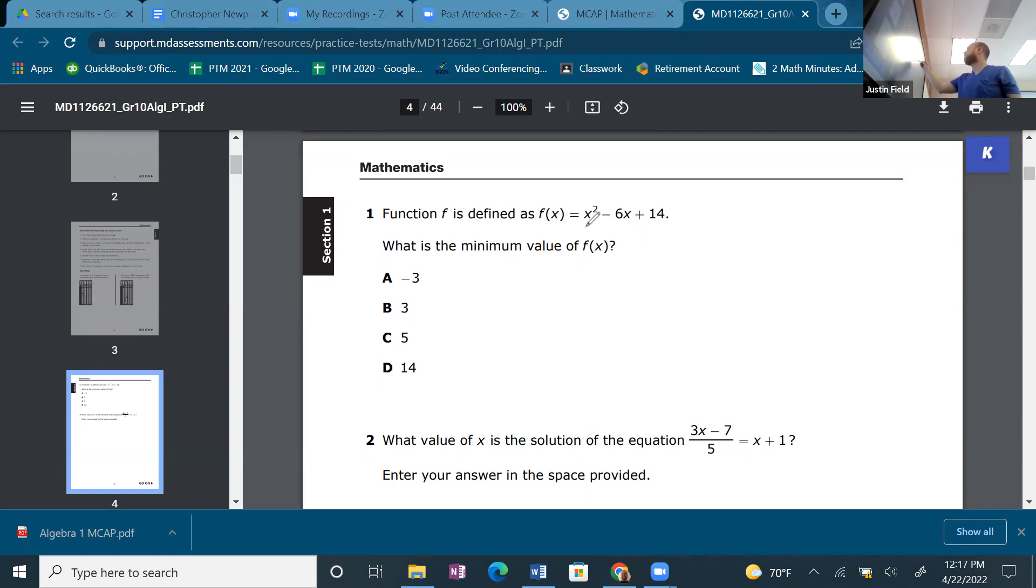So one thing you should know, though, is that they are asking for the y-value. Alright, so f(x) is a y-value. They didn't say what is the x that would produce the minimum value of f(x). Then they would be asking for the x-value. They're asking for the y-value of the vertex.